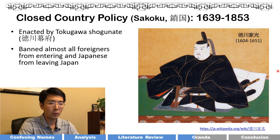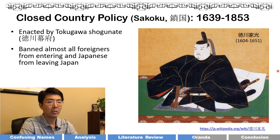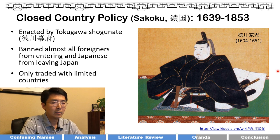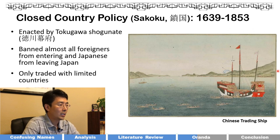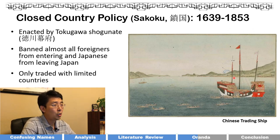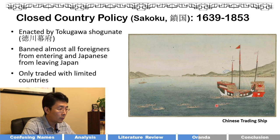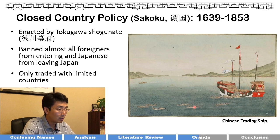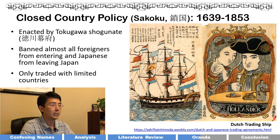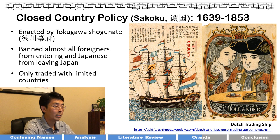The historical background is the Japanese 'sakoku' (closed country) policy, enacted from 1633 to 1853 — over 200 years. It was enforced by the Tokugawa Shogunate and banned most foreigners from entering Japan and Japanese from leaving Japan. Only limited trade with certain countries was permitted — mainly China, as shown by the large Chinese trading ships in historical illustrations, and the Netherlands (the Dutch).